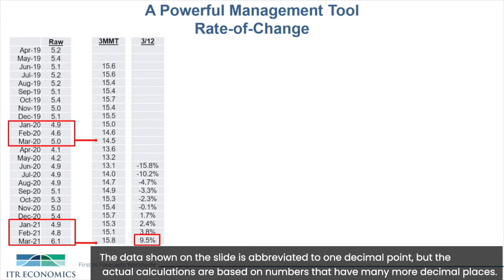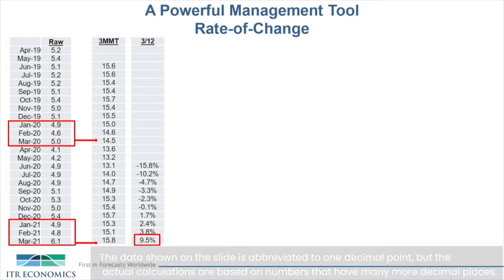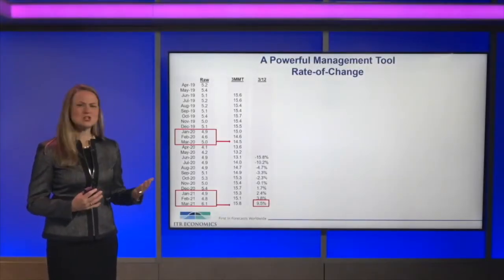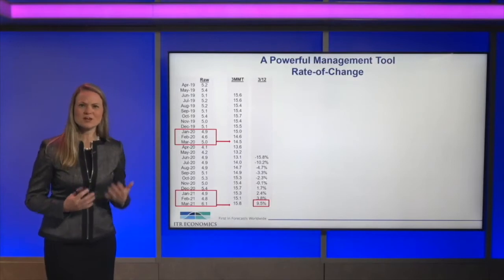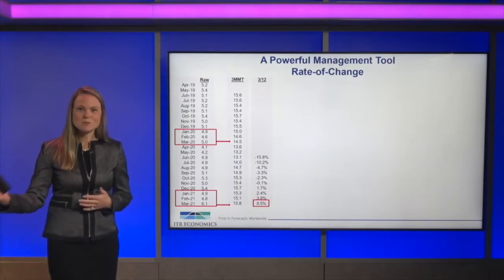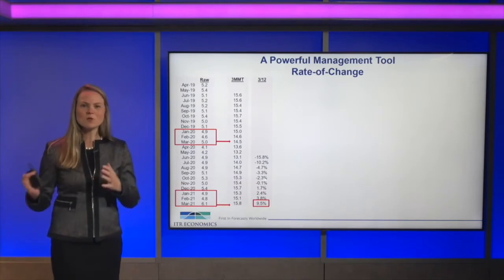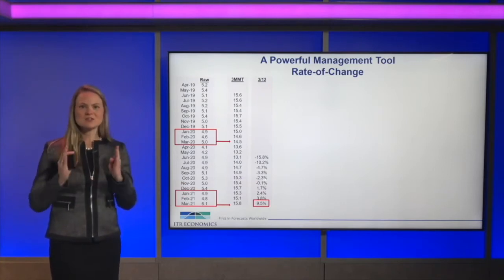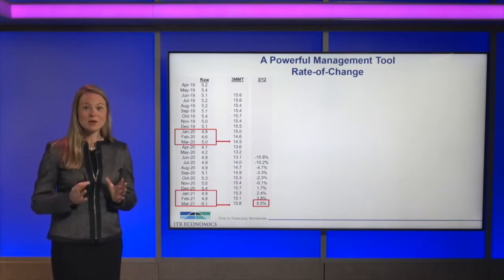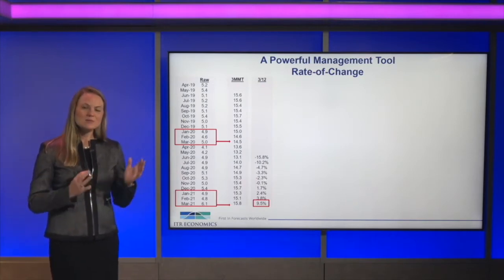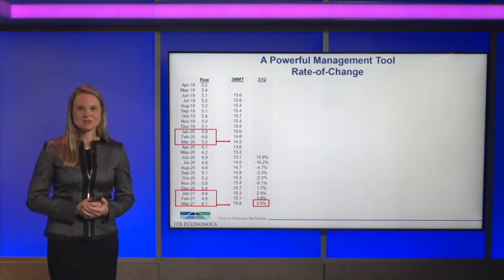Now, I'm always going back one year. There are a few reasons for that — the most important of which is I take out any seasonality. A lot of folks ask whether this methodology still works if their business is seasonal. And it absolutely does, because we're always looking back to the same three months. So I'm comparing busy season to busy season, or slow season to slow season, and I'm getting a more apples-to-apples comparison.